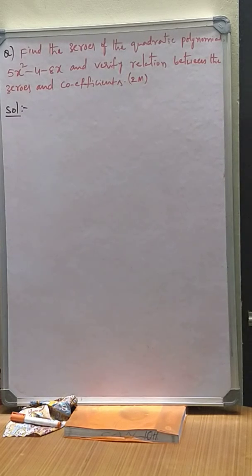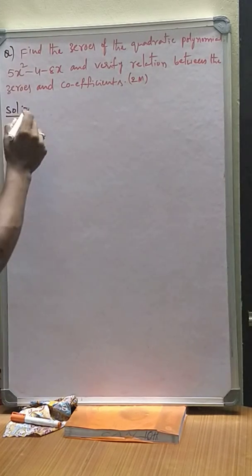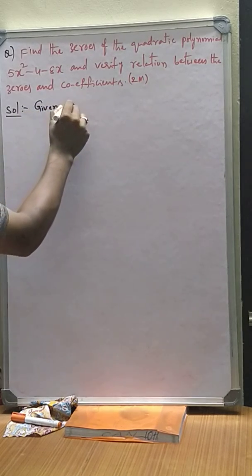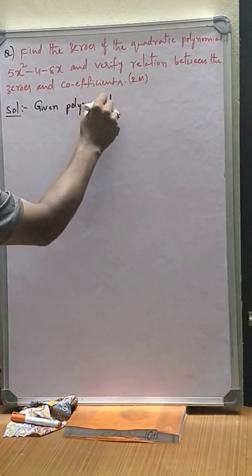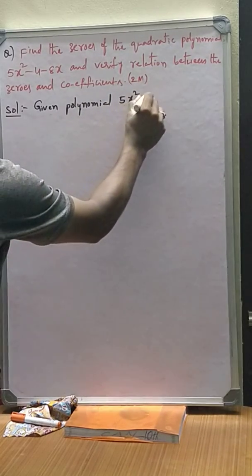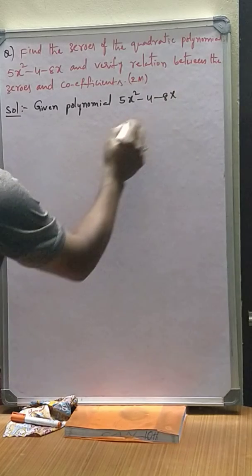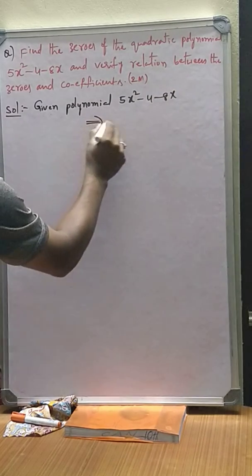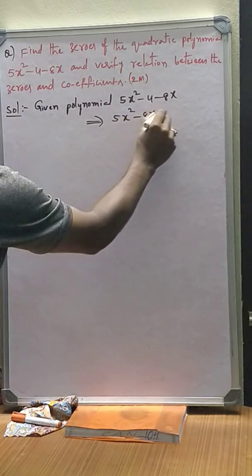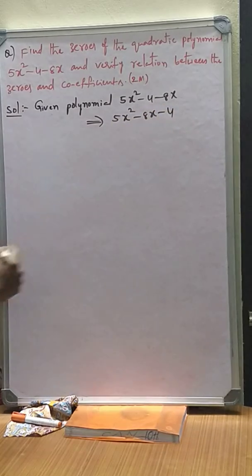Very important one. Given polynomial is 5x² - 4 - 8x. It is not of the standard form. If you rewrite it becomes 5x² - 8x - 4.